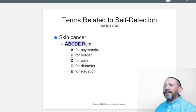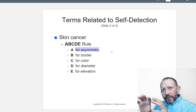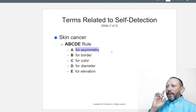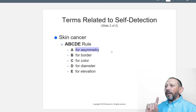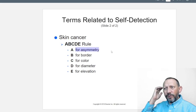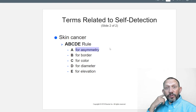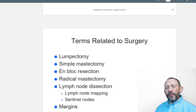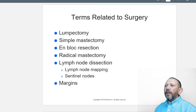For skin cancer, we use the ABCDE rule. A — asymmetry: an unusually shaped mole that doesn't have a clear matching half. B — border: is it smooth or rough? A rough border is a bad sign. C — color: is it uniform or does it vary in color throughout? D — diameter: is it larger than a pencil eraser? E — elevation: is it raised off the skin surface? If any of these are concerning, see a dermatologist.